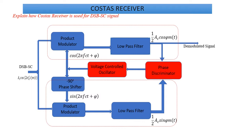Basically, your system consists of three parts. The upper part is called your first part — that is called your upper coherent detector. It is also called by another name: it is called your I channel, or in-phase channel.